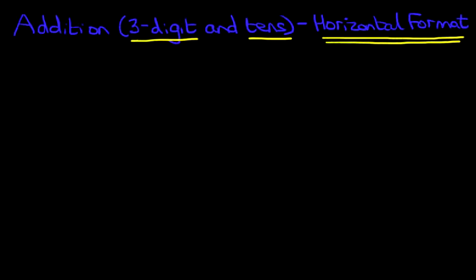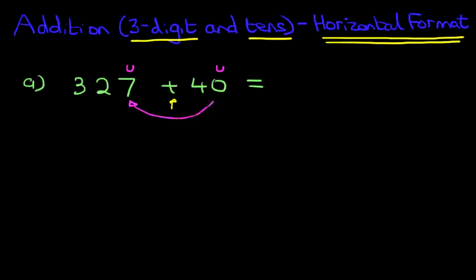So let's begin with our first example. This is a nice easy one. 327 plus 40. Now let's label the digits on the right. For 327, the 7 is the units. For 40, the 0 is the units. So we're adding the 7 and the 0. That means it remains the same. 7 plus 0 is 7.